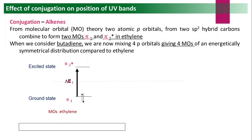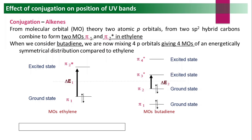For 1,3-butadiene, four p orbitals combine to give four molecular orbitals in a symmetrical energy distribution: π1, π2 (bonding/ground state) and π3*, π4* (antibonding/excited state). Excitation occurs from HOMO (π2) to LUMO (π3*). The required energy ΔE2 is smaller than ΔE1 in ethylene. Since energy required is less, lambda max shifts to a longer wavelength — 220 nm for butadiene.